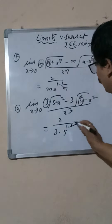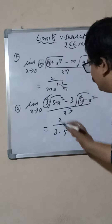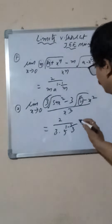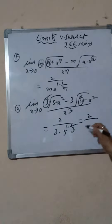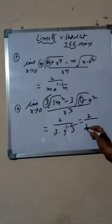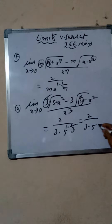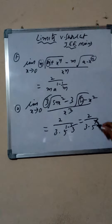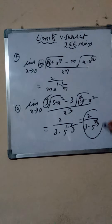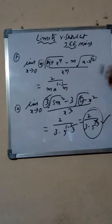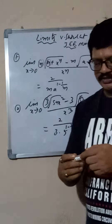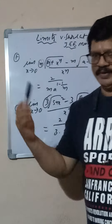So: 1 minus 1 by M means 1 minus 1 by 3 equals 2 by 3. The answer is 2 by 3 into 5 power 2 by 3. This is 2 divided by (3 times 5^(2/3)). Very easy — simple shortcuts for limits!